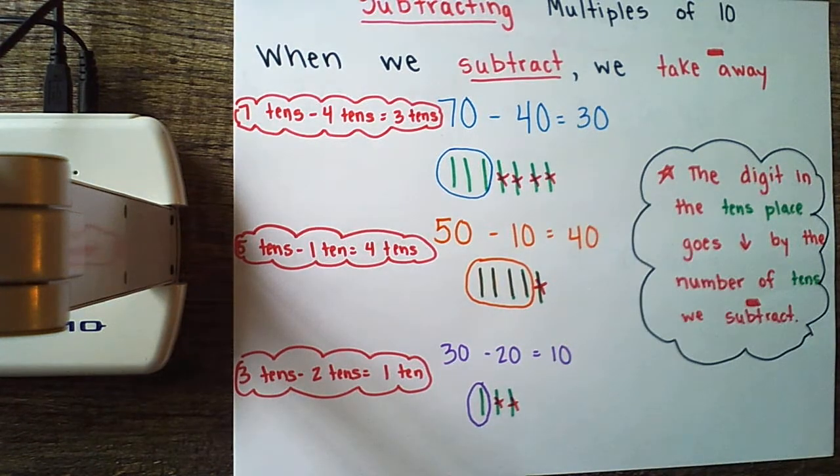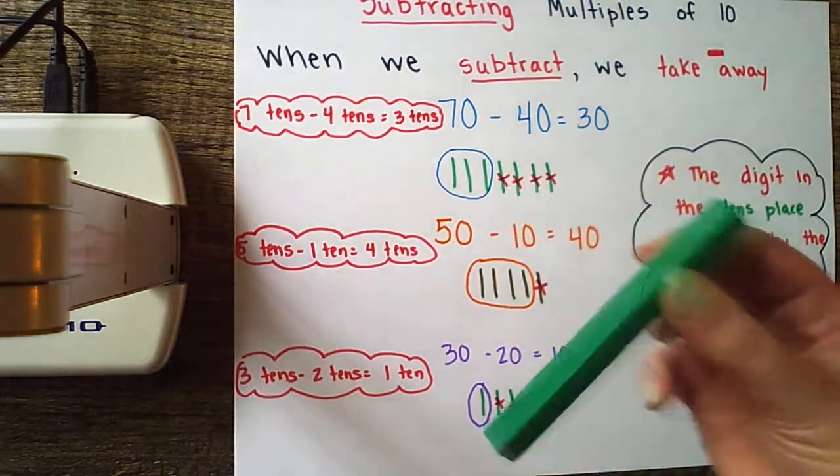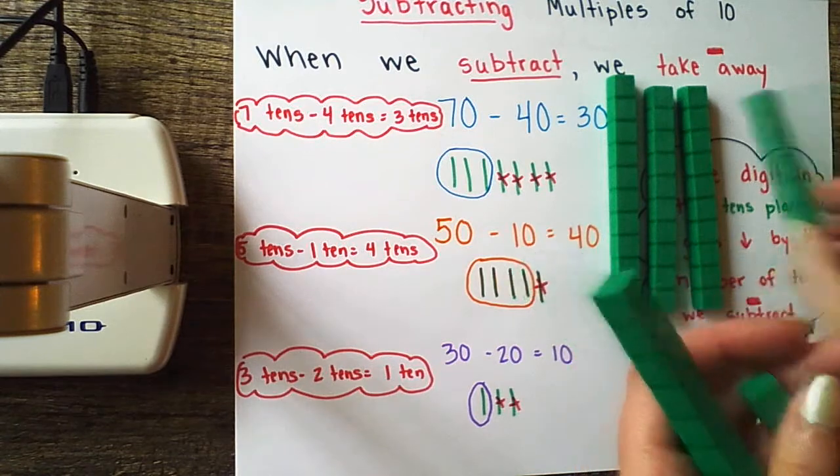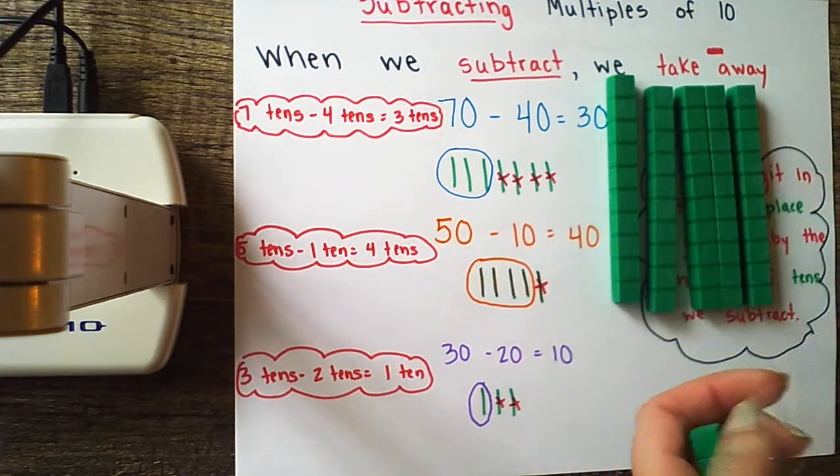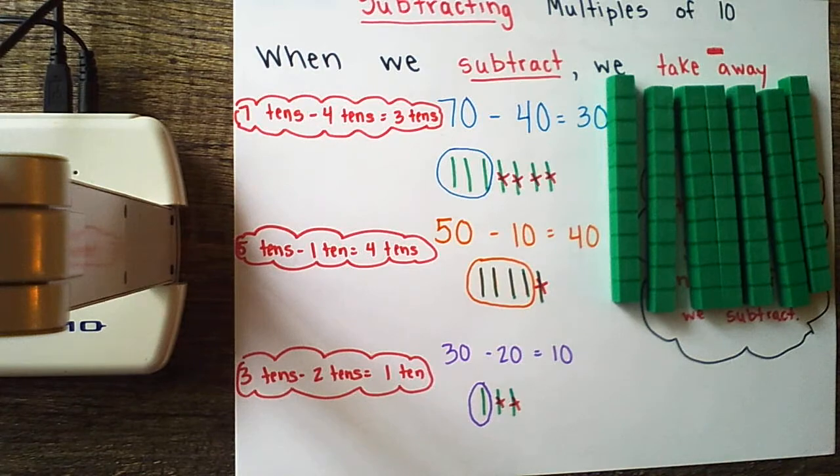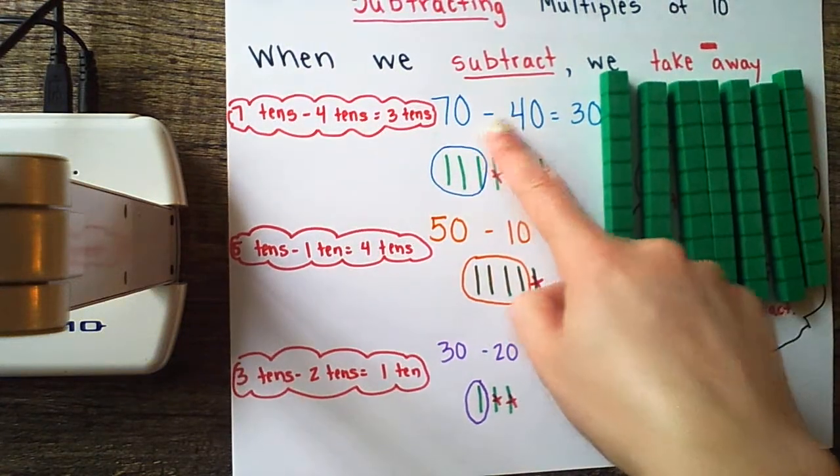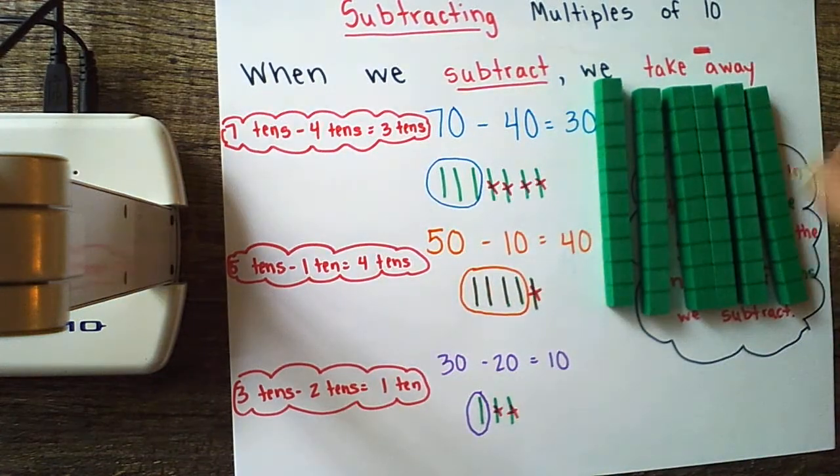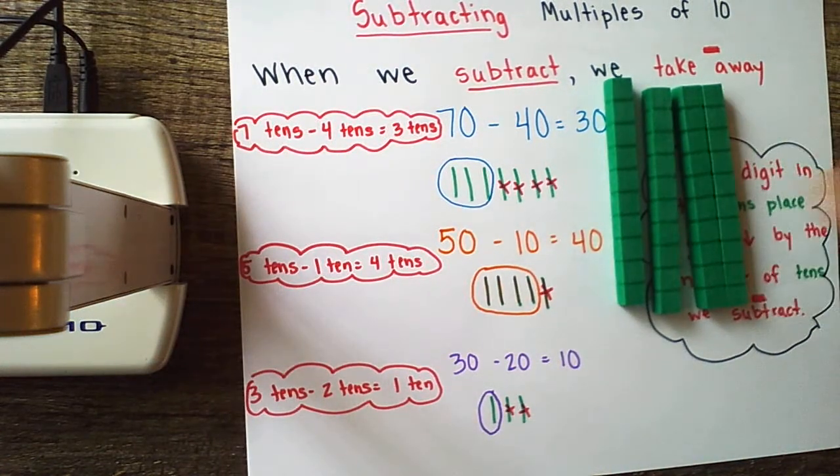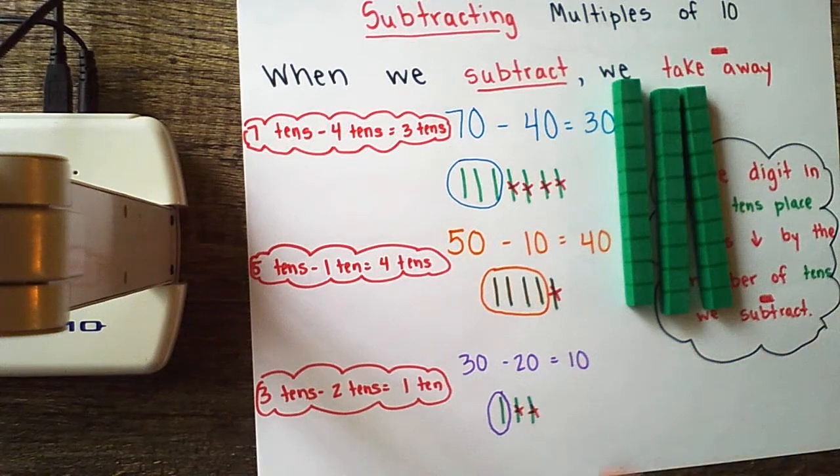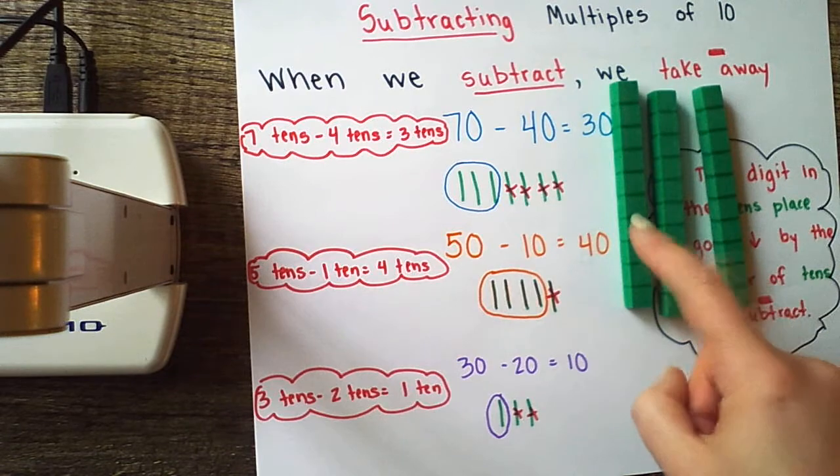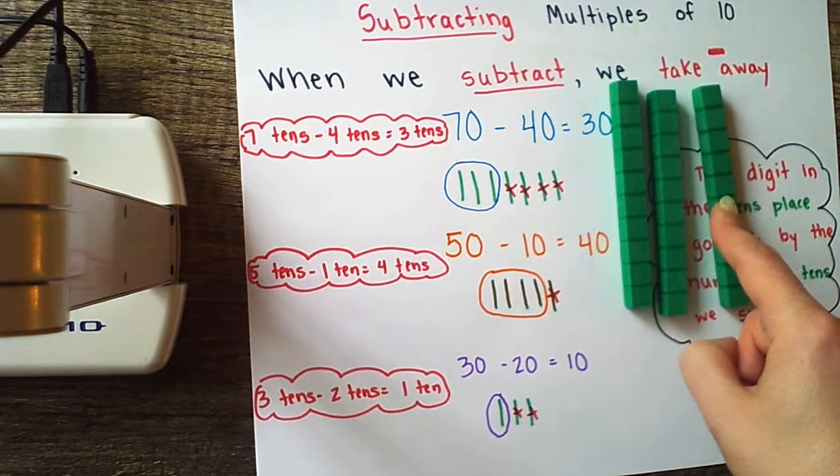You could do this with your base 10 blocks. For example, I know that 70 is the same as seven 10s like this: one, two, three, four, five, six, seven. I'm subtracting or taking away 40 or four 10s: one, two, three, four. And I'm now left with 30 or three 10s: one, two, three 10s, or 10, 20, 30 altogether.